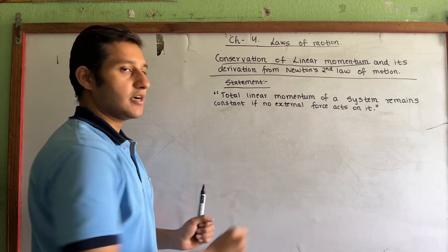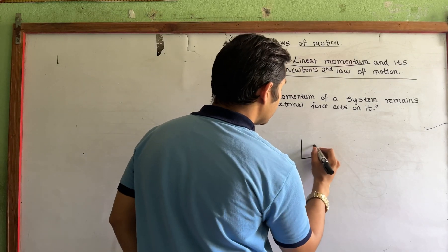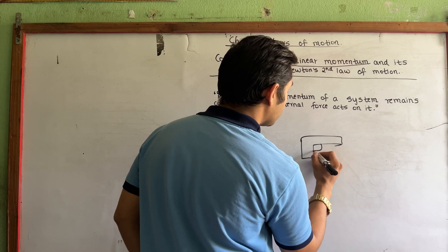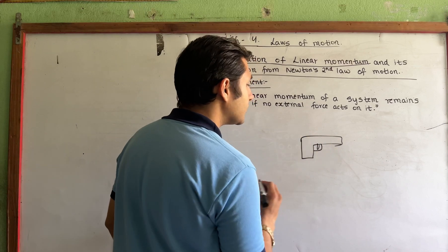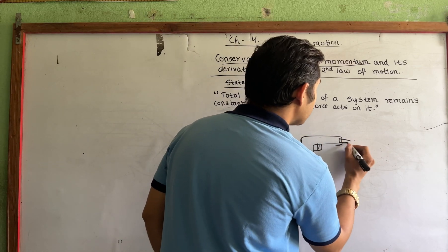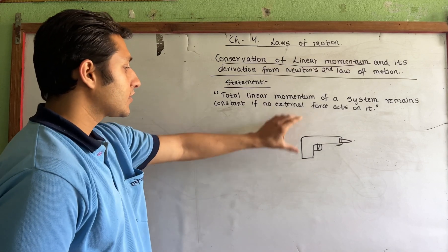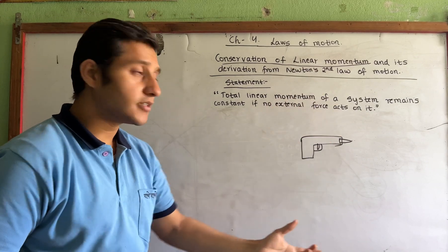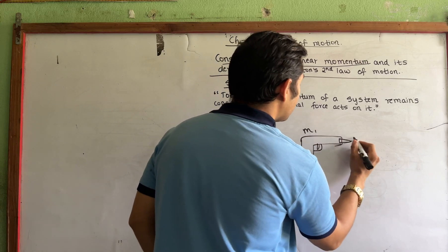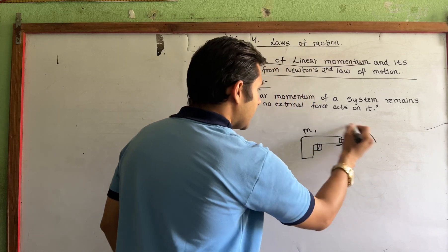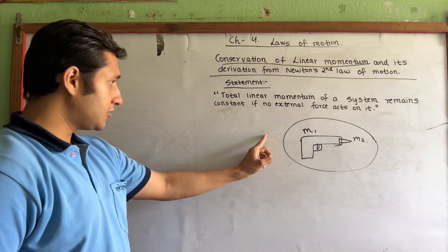This is a gun. This gun — when there is a bullet fire, this is a bullet fire. It is a mass — this mass and this mass. What is a mass? It is a system. So this is a system.